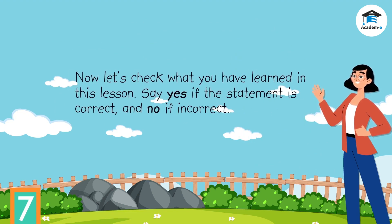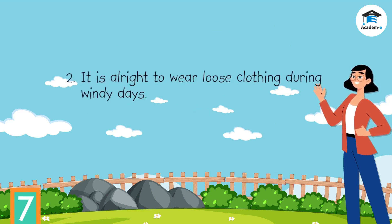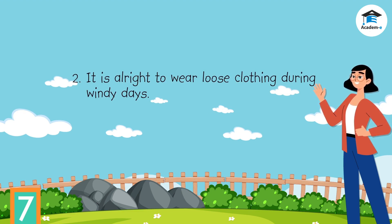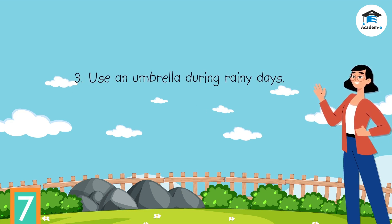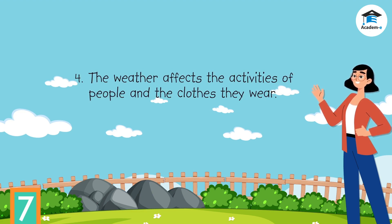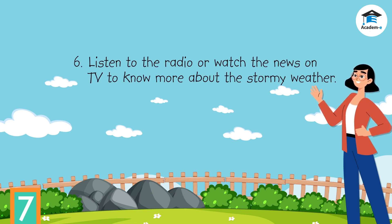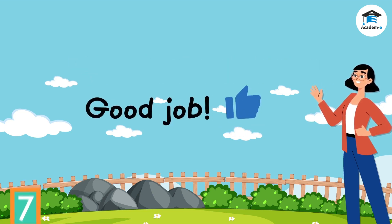Now let's check what you have learned. Say yes if the statement is correct and no if incorrect. One: you can play outdoors during stormy weather — No. Two: it is all right to wear loose clothing during windy days — No. Three: use an umbrella during rainy days — Yes. Four: the weather affects the activities of people and the clothes they wear — Yes. Five: wear thick clothes during sunny days — No. Six: listen to the radio or watch the news on TV to know more about stormy weather — Yes. Did you get the correct answers? Good job!